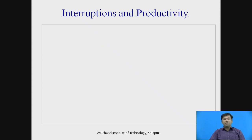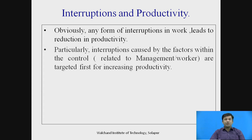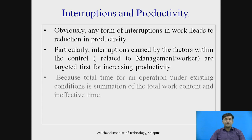Moving to the topic of interruptions and productivity: any form of interruption in work leads to a reduction in productivity. Particularly, interruptions caused by factors within the control — such as those related to management and workers — are targeted first for increasing productivity. The factors within the control are the first priority to address, because the total time of an operation under existing conditions is the summation of total work content and ineffective time.